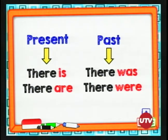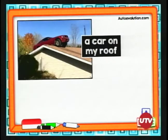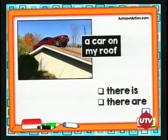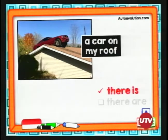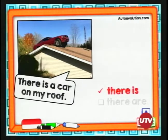Ahora sí, let's practice. Vamos con el primer ejemplo: "a car on my roof". Lo que quiero decir es que hay un carro en mi techo. ¿Con cuál de las dos opciones hacemos la oración — there is o there are? "A car" es singular, entonces usamos there is. Singular con singular. Quedaría: "There is a car on my roof" — hay un carro en mi techo.